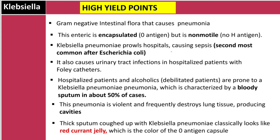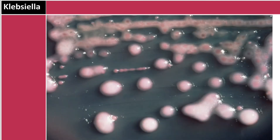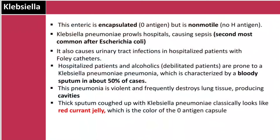The thick sputum coughed up with Klebsiella pneumonia classically looks like red currant jelly — that is a classic buzzword. Most exams will describe the sputum color as red currant jelly, which corresponds to the color of the K antigen capsule. On a plate, Klebsiella appears mucoid due to its polysaccharide capsule.